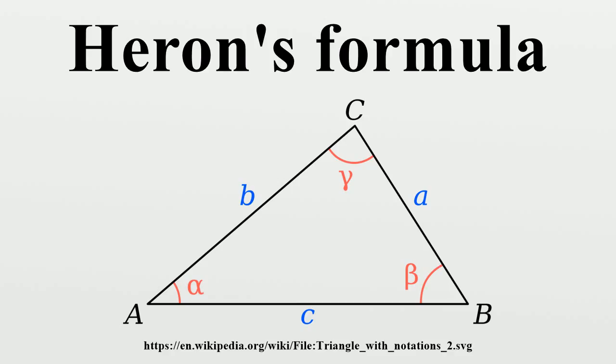Heron's formula is also a special case of the formula for the area of a trapezoid based only on its sides. Heron's formula is obtained by setting the smaller parallel side to zero. Expressing Heron's formula with a Cayley-Menger determinant in terms of the squares of the distances between the three given vertices illustrates its similarity to Tartaglia's formula for the volume of a three-simplex.